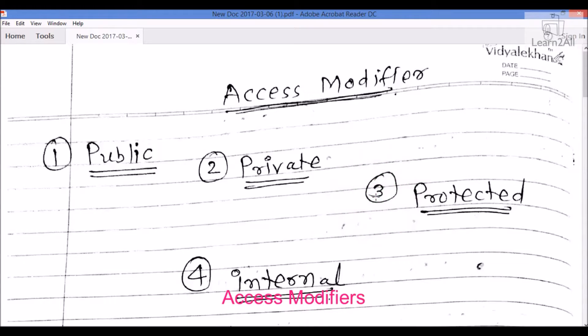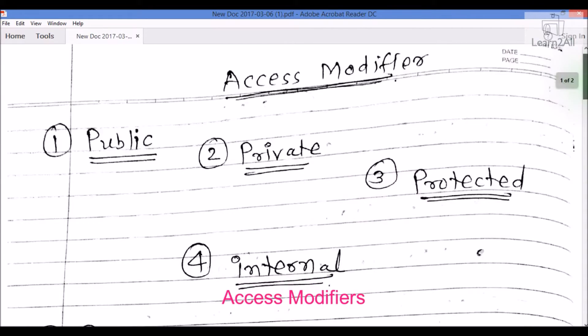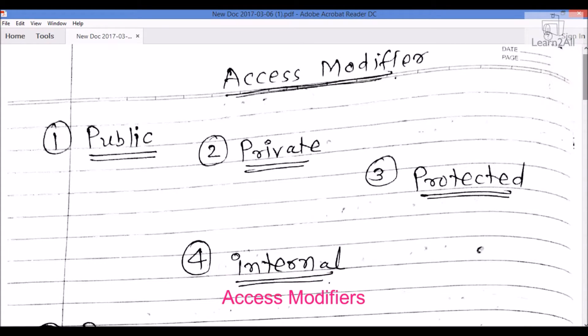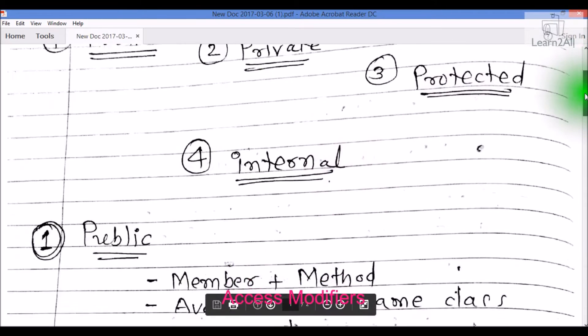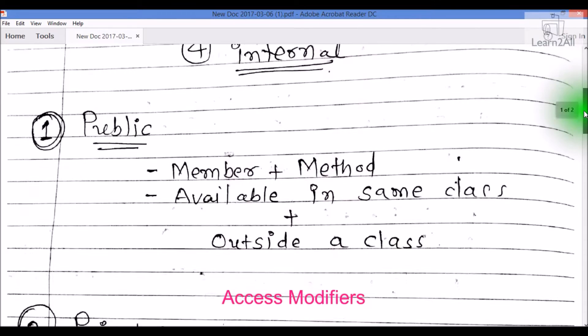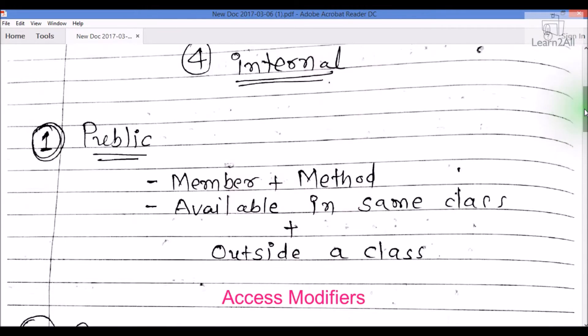Hello friends, in this video tutorial we will learn various types of access modifiers which are used in C#. We will discuss these four access modifiers: public, private, protected, and internal. In the next video, we will discuss the difference between private and internal access modifiers. Now let's check out each access modifier in brief.